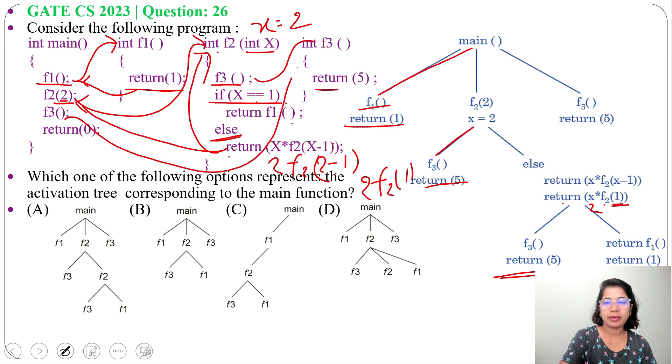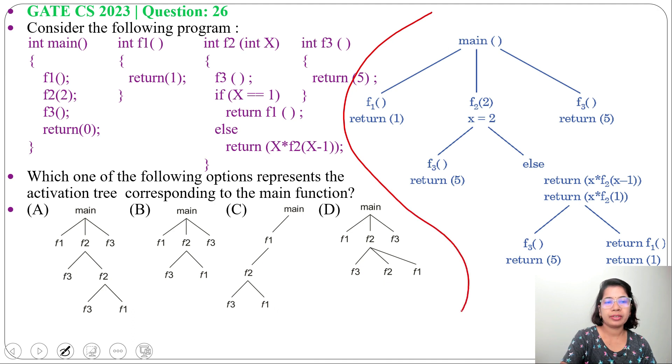Then from main function we will call F3. So this is the activation tree for this program. Now just match the option. Option A matches with this. From main F1, F2, F3. Then from F2, F3, F2. Then from F2, F3 and F1. So answer will be option A.